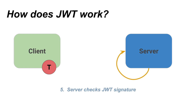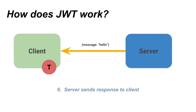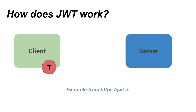But our server knows not to trust a client, because clients cannot be trusted. So our server verifies this token as who it says it's from and that it hasn't been tampered with. If everything checks out, like it does in our example, the server sends back a response with the requested data, and everybody lives happily ever after. And that's a brief overview of how JSON web tokens work.